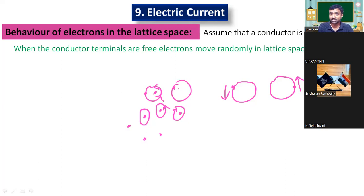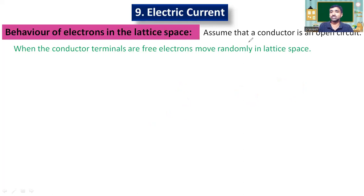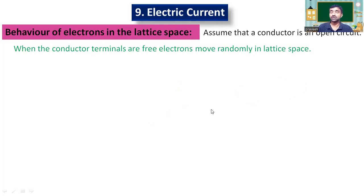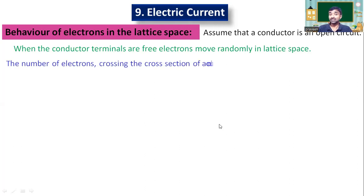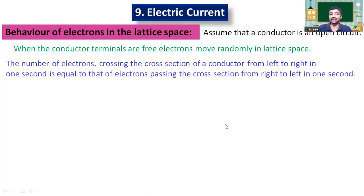You can imagine many atoms like that. So when the conductor terminals are free from the source — open circuit — the electrons are moving randomly in the lattice space. Now, the number of electrons crossing the cross-section area of the conductor from left end to right end, or right end to left end, will be considered to be equal. Look at the screen clearly.